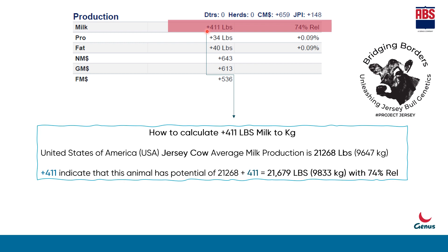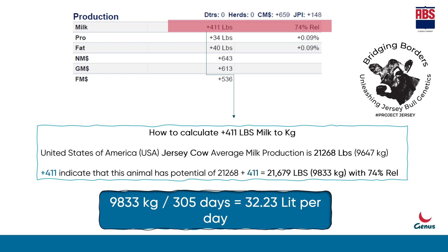This means the Romeo bull's daughters have the potential to give an additional 411 pounds of milk above the average value. So 21,268 plus 411 equals 21,679 lbs, which is equivalent to 9,833 kilograms of milk in one lactation with 74% reliability. To calculate per-day production, we take 9,833 kg divided by 305 days — 305 days being the average lactation length for either Holstein or Jersey cows.